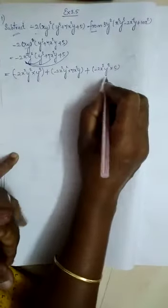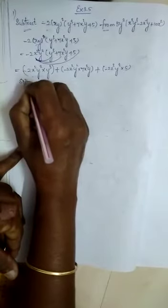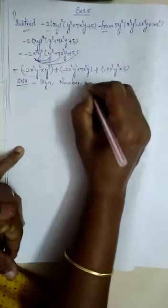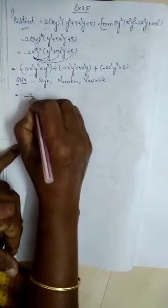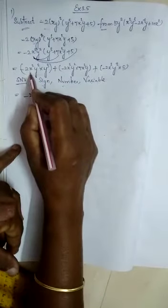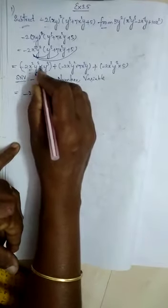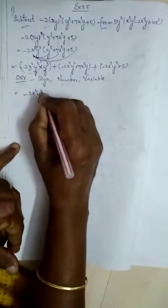Now multiply using the SNV method: first multiply the sign, then the number, then the variable. For the first arc: sign — no sign means plus, minus into plus is minus. Number — only one number, write as such. Variable — x appears once, write as such. For y: y squared times y cubed, add the powers since bases are same, 2 plus 3 is 5, giving y power 5.